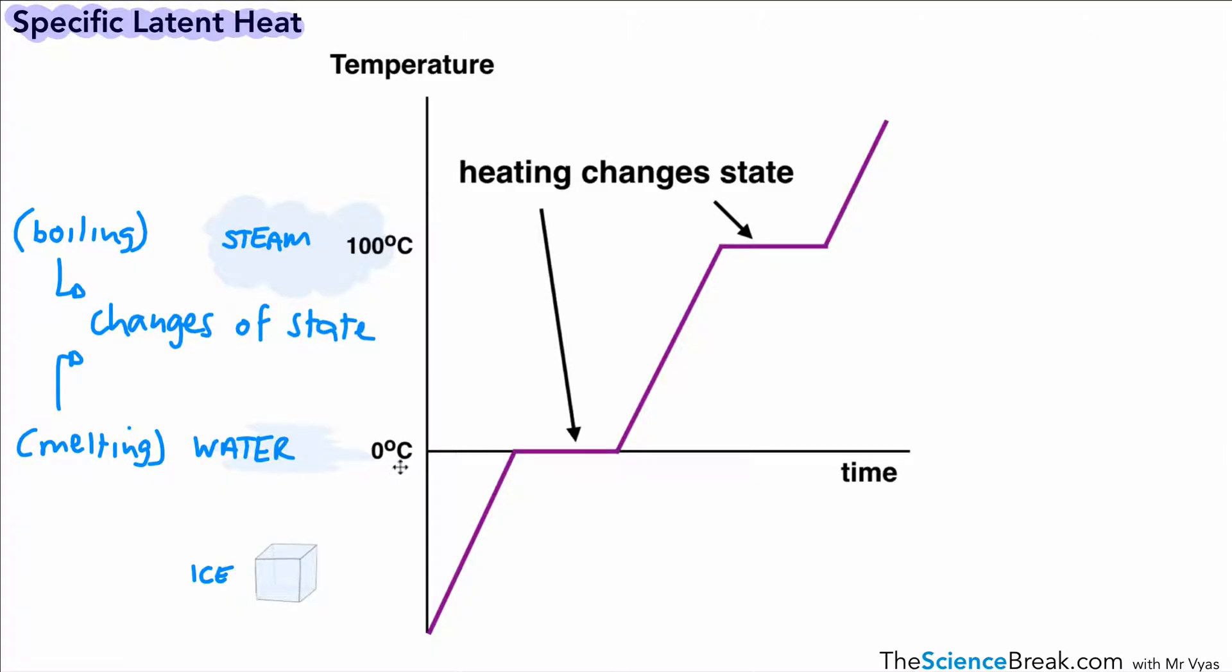Our graph shows what's happening at the different changes of state. At the top here, that flat line is changing from liquid to gas, and the bottom one is changing from solid to liquid. What's going on at that flat part of the curve? We can see that the energy that's being transferred to the substance is changing state but it's not changing the temperature. So the energy supplied there changes the state but it doesn't change the temperature.